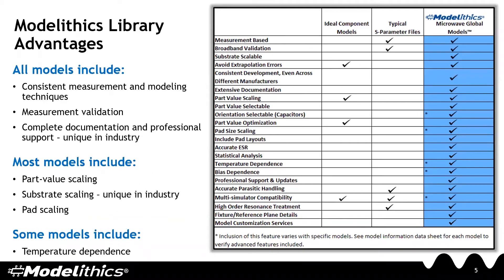Let's discuss the advantages of using Modelytics models over ideal component models and typical S-parameter files. Modelytics develops all models using consistent measurement and modeling techniques, so all models are measurement validated. Model features include part value, substrate, and solder pad scalability. Part value scaling in particular makes the models well-suited for tuning and optimization. Substrate scalability is also important — in contrast, an S-parameter file is created using just one specific substrate, so if you're using a different substrate you could end up with results that differ from the S-parameter file data. Other model features include temperature dependence and statistical analysis.